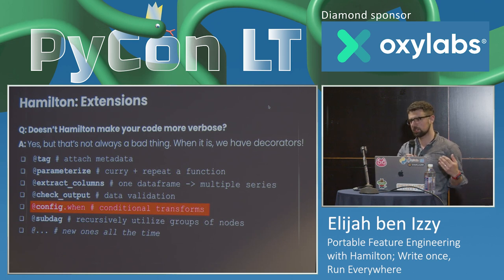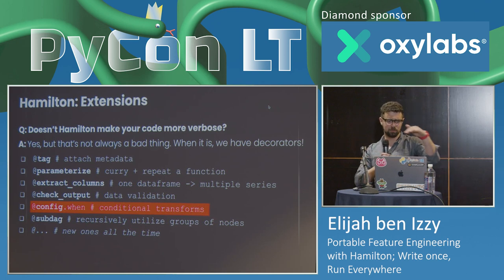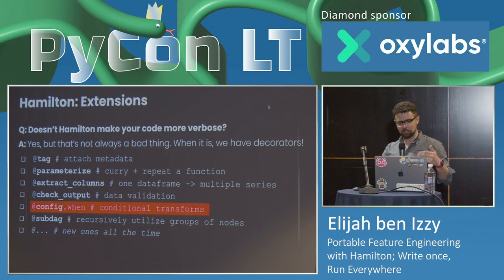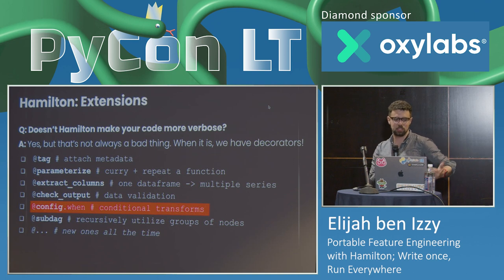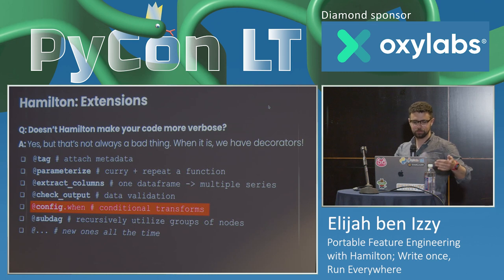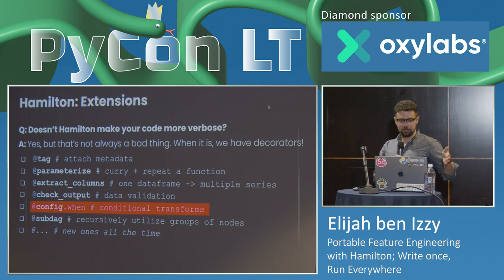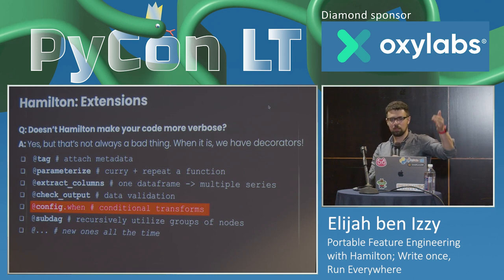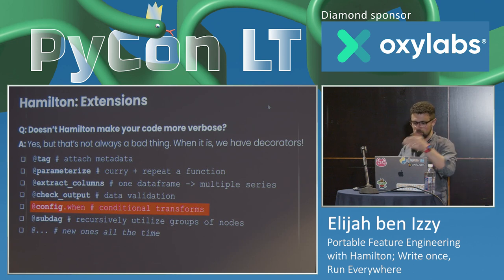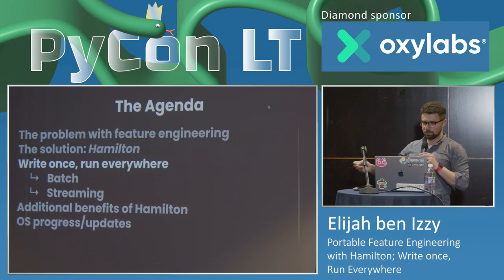One question is: doesn't Hamilton make your code more verbose? Hamilton might need a little more code, but that's not always a bad thing. Code is read about ten times as much as it's written, and verbose code in a nice structure can be really clear to read. In cases where verbosity is a concern, there are extra decorators: tag to attach metadata, parameterized to run a function over different sets of data, extract columns to put a node for multiple series. And importantly for this talk, config.when, which allows you to write conditional transforms distinguishing between batch and streaming mode.